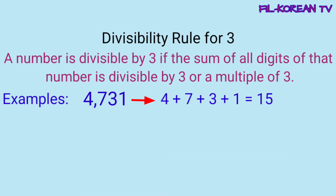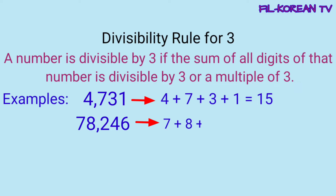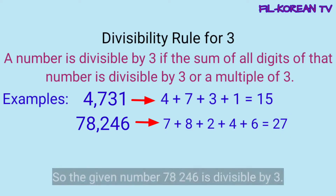Another example, 78,246. I-plus natin yung lahat ng digits. 7 plus 8 plus 2 plus 4 plus 6 equals 27. Ang 27 ay divisible by 3 o multiple ng 3. So, yung given number ay divisible by 3.